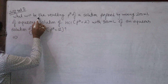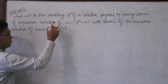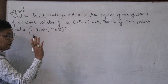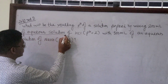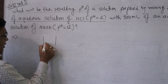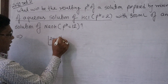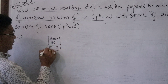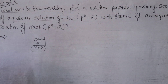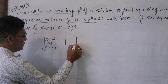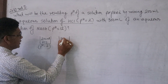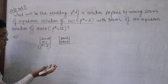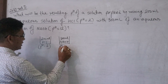What will be the resulting pH? How will the final pH be prepared by mixing solutions? We have 200 ml of aqueous solution of HCl with pH 2, mixed with 300 ml of aqueous solution of sodium hydroxide with pH 12.